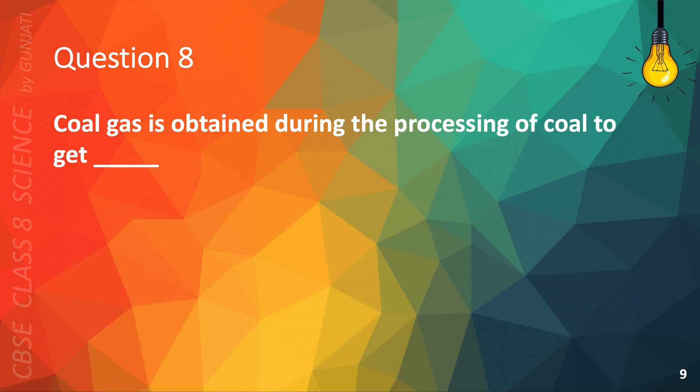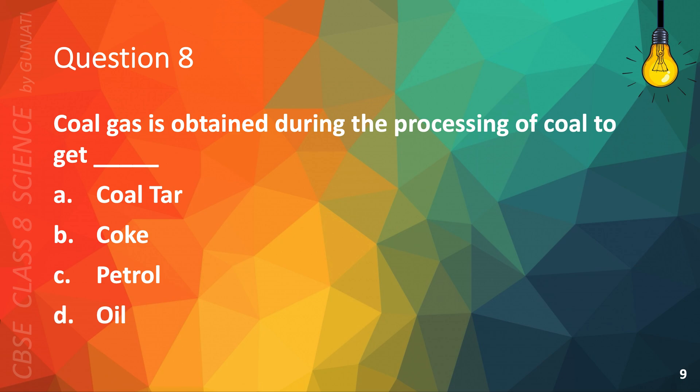Question 8. Coal gas is obtained during the processing of coal to get A. Coal tar, B. Coke, C. Petrol, or D. Oil? The correct answer is B. Coke.